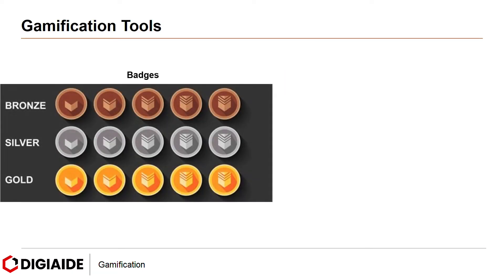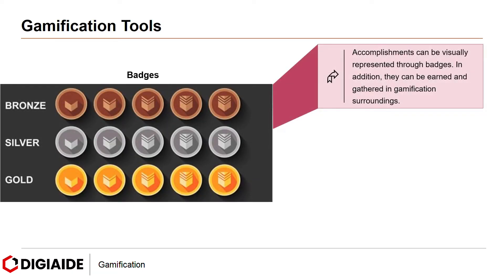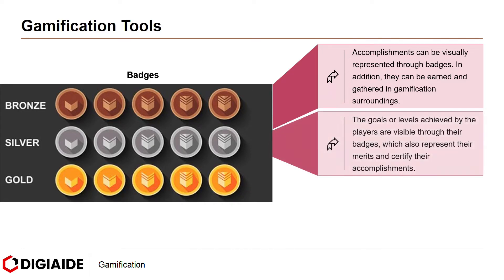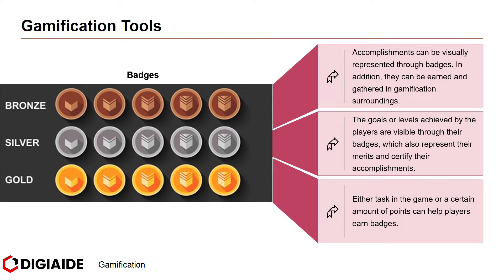Moving on to badges. Accomplishments can be visually represented through badges. They can be earned and gathered in gamification surroundings. The goals or levels achieved by players are visible through their badges, which also represent their merits and certify their accomplishments. Completing either a task in the game or accumulating a certain amount of points can help players earn badges.